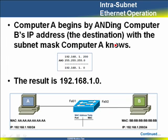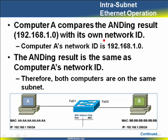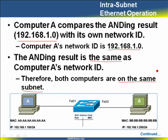Computer A is going to start by taking Computer B's IP address — 192.168.1.200 — and ANDing it with Computer A's subnet mask, 255.255.255.0. The result comes out to be 192.168.1.0. Computer A's own network ID is also 192.168.1.0. They are the same, which means both computers are on the same subnet. This ANDing process identifies whether the destination computer is on our subnet or whether we need to pass the message on to the default gateway. Since they're on the same subnet, now we know how to proceed.